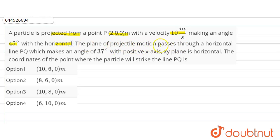The plane of projectile motion passes through a horizontal line PQ which makes an angle of 37 degrees with the positive x-axis in the xy plane, which is horizontal.